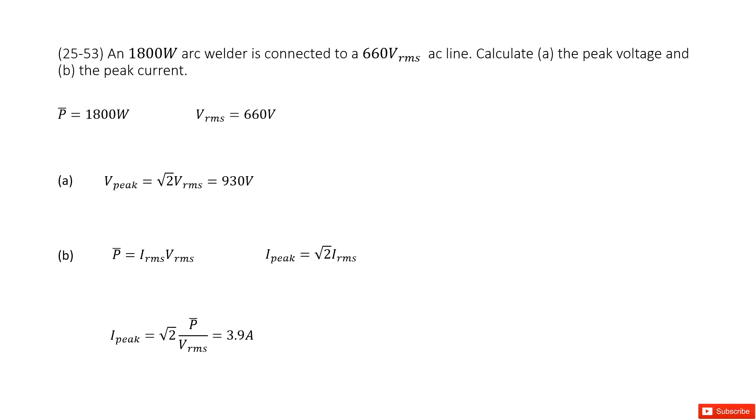There we talk about alternating current. So for the devices, the power is given as 1800W and the voltage for RMS is given as 660V.